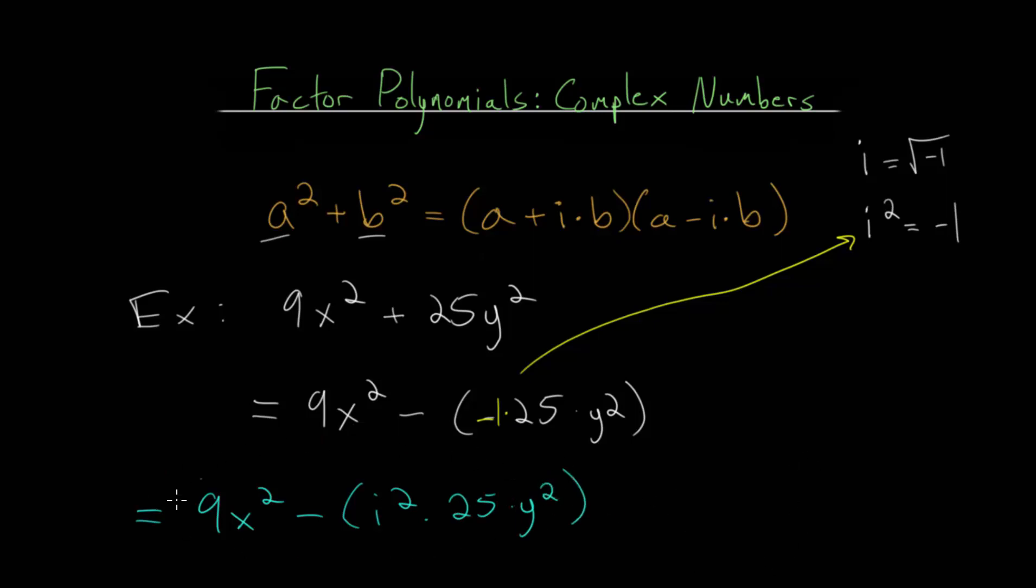And this right here you may recognize as a difference of squares. Though it might be more clear if we write this as 3 squared times x squared minus i squared times 5 squared times y squared. And since we have a product and everything is squared here,